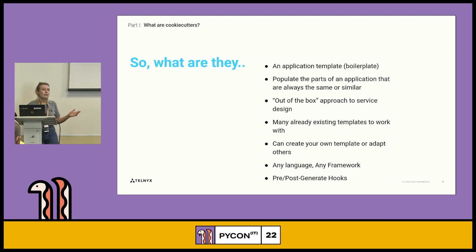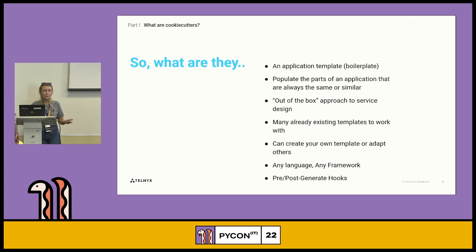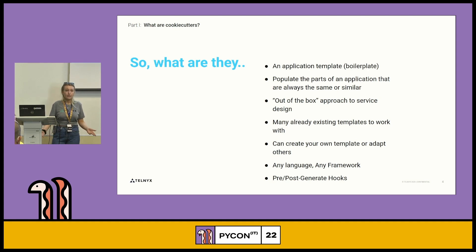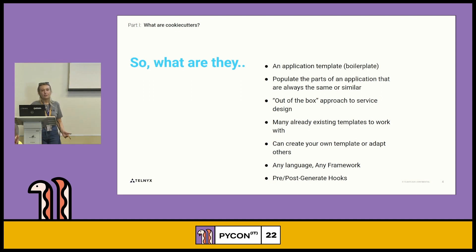There are loads of templates that already exist online — look on GitHub, search cookie cutter, and you'll find loads. They're available in all languages. The cookie cutter library is in Python, but it's still used with React, JavaScript, whatever you want. You can also create your own, which is actually a lot easier than I thought it was going to be. Leading up to this talk, I created a few, and it's actually pretty easy.